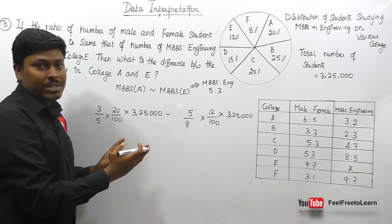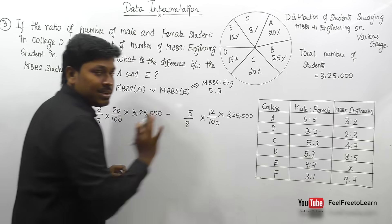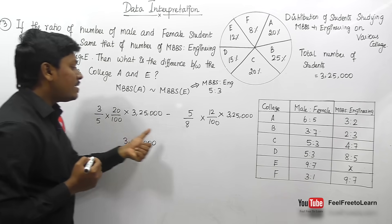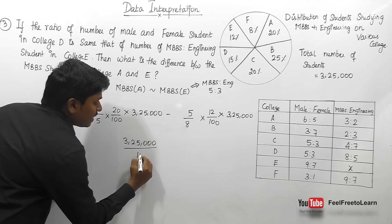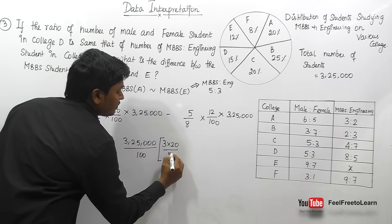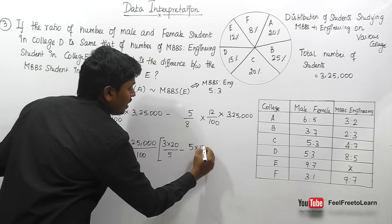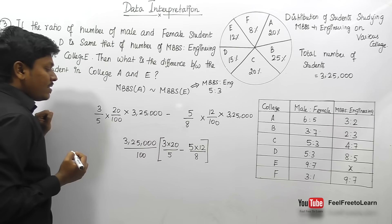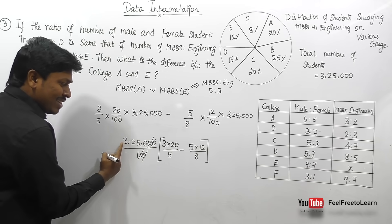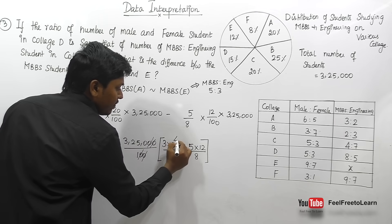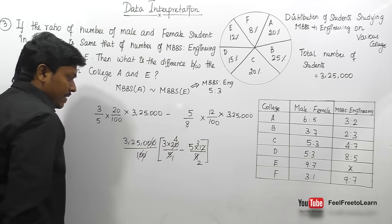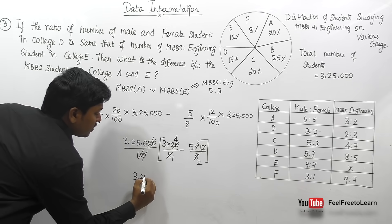Since 3,25,000 appears in both terms, take it as common and cancel. Similarly cancel both 100s. Remaining values: college A MBBS = 3×20/5, college E MBBS = 5×12/8. After cancelling on the 5-table (5 fours are 20) and 4-table (4 threes are 12), we get 3,250 × (12 − 15/2).